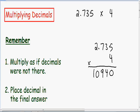So now here in our final answer is when we need to go back to the original problem and count how many numbers are to the right of the decimal. In our first number, 2.735, we have one number to the right, we have two numbers to the right, and we have three numbers to the right of the decimal.